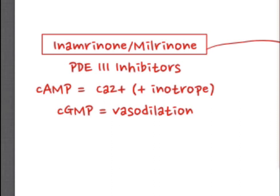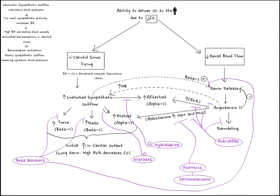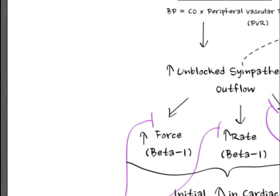Drugs used in acute heart failure that affect the compensatory mechanisms include dobutamine and dopamine. Both are beta-1 agonists which serve to increase the force and rate of contraction in an acute situation to increase cardiac output.